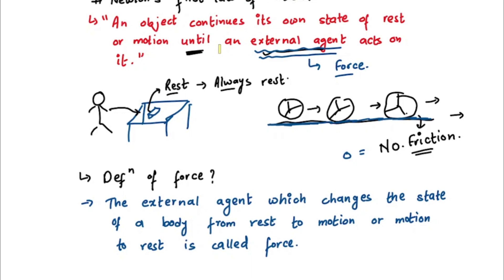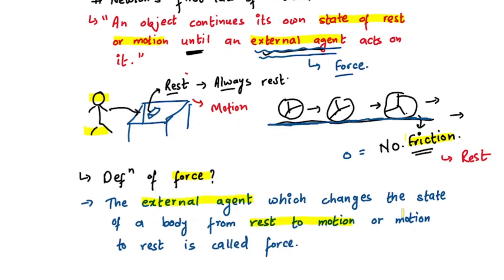So what Newton's first law of motion says is that an object continues its own state of rest or motion until an external agent acts on it. If there is no external agent, it will always continue its own state of rest or motion. Our external agents — for example, here we have a human being, and here we have friction. These external agents which change the state of the body from rest to motion, or from motion to rest, according to Newton, are our force. Hence, we can define force as the external agent which changes the state of our body either from rest to motion, or from motion to rest. It's the external agent which changes the state of our body.